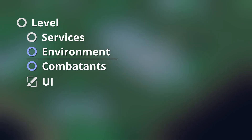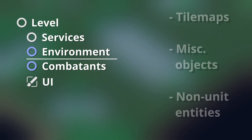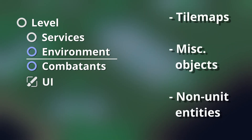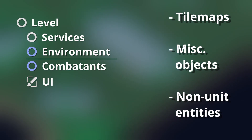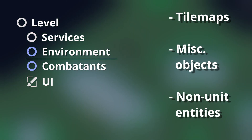Environment nodes are just that: tile maps, objects in the level, etc. Any entity that's not a unit goes here. Eventually some items will be destructible or interactable, but for now, other than impacting pathfinding or action targeting, there's really nothing too special about these nodes.